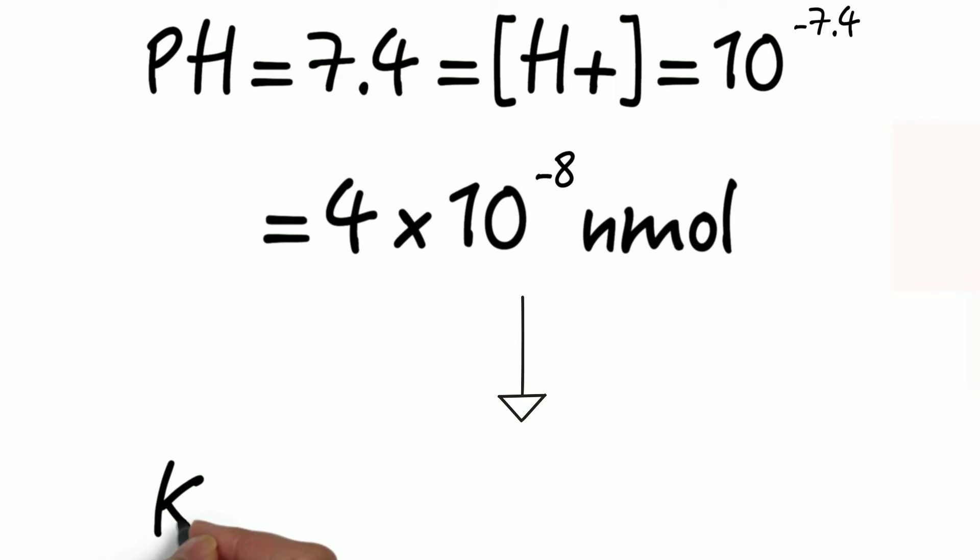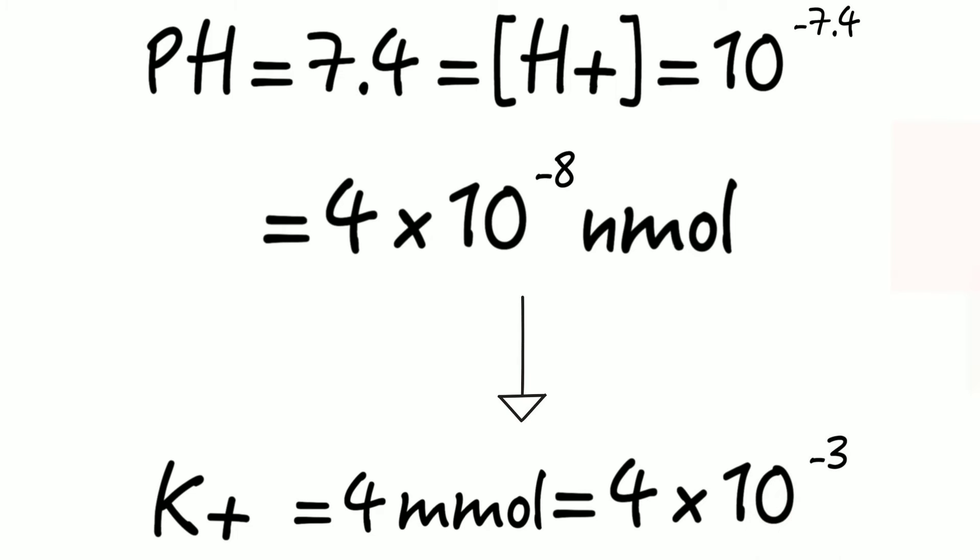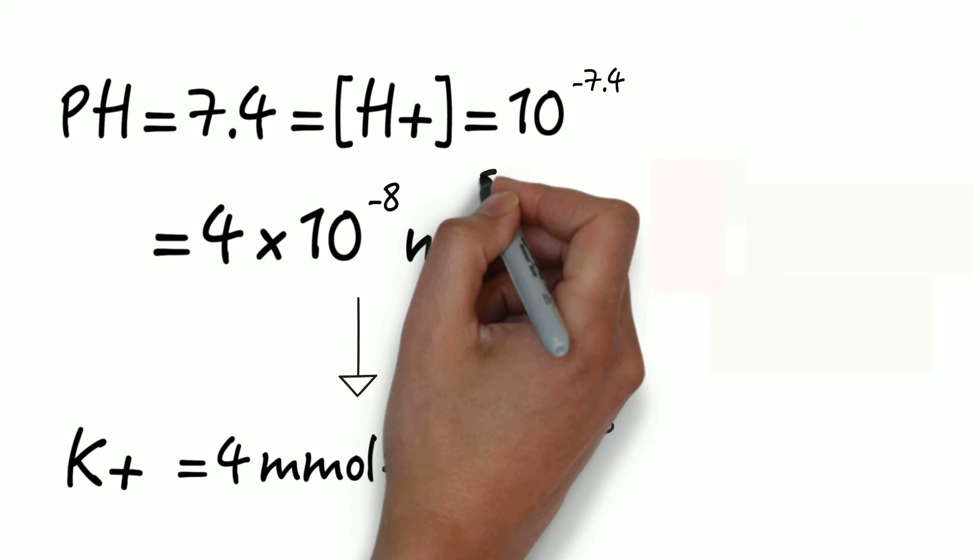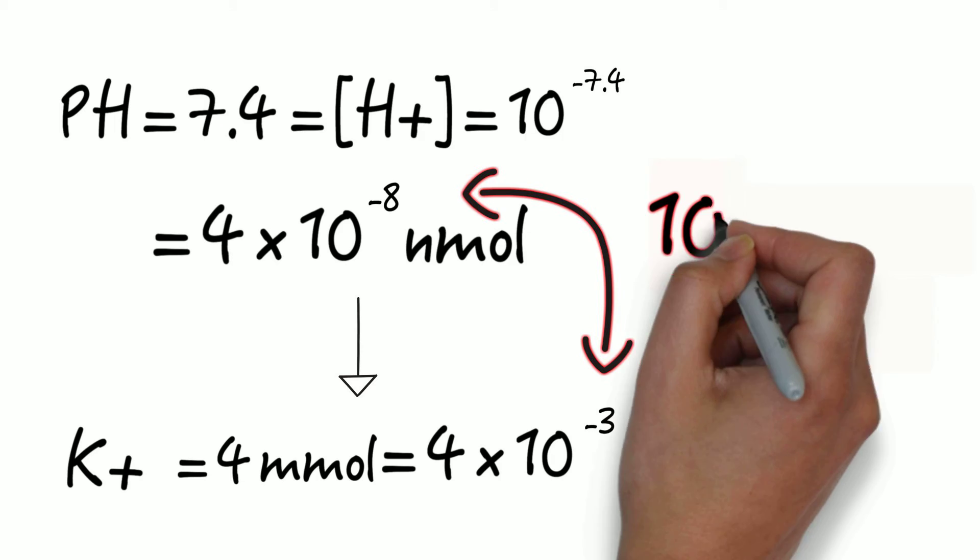Now let's compare that to the concentration of potassium as I said previously. Now what's the normal potassium concentration? That's about 4 millimolar, right? 4 millimolar would equal 4 times 10 to the minus 3. Now you can probably see why I converted the pH value above. Now what's the difference between 4 times 10 to the minus 3 and 4 times 10 to the minus 8?